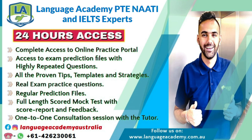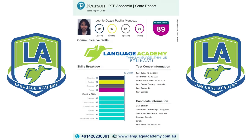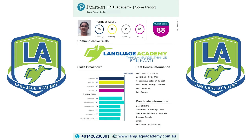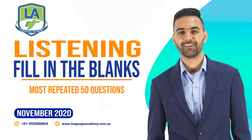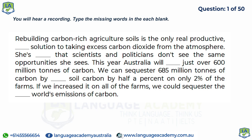Rebuilding carbon-rich agricultural soils is the only real, productive, permanent solution to taking excess carbon dioxide from the atmosphere. She's frustrated that scientists and politicians don't see the same opportunities she sees. This year, Australia will emit just over 600 million tons of carbon. We can sequester 685 million tons of carbon by increasing soil carbon by half a percent on only two percent of the farms — and even more if we increased it on all of the farms.